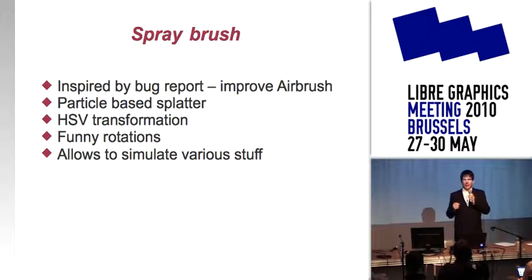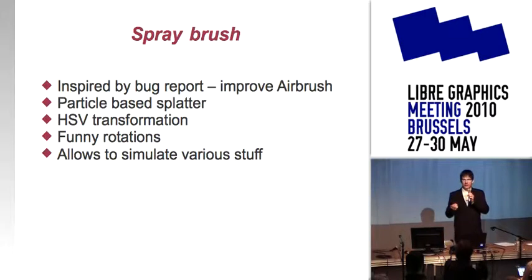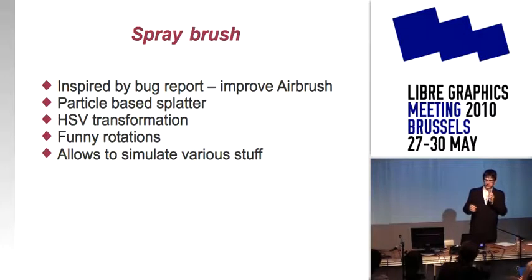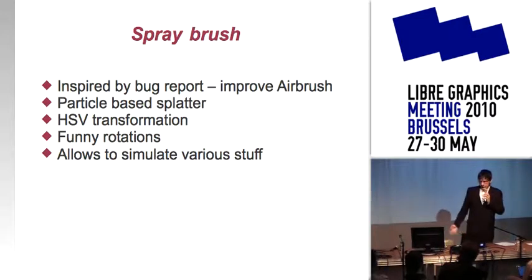I wanted to be very expressive with colors. Usually when you paint, you control opacity with pressure. So I decided to add hue, saturation, and value controls — you can control hue, saturation, and value by sensor, meaning you can control this with pressure or some other input. Then I added some rotation to the particles, so when you paint, the particles are rotated in various ways and you can simulate various media.